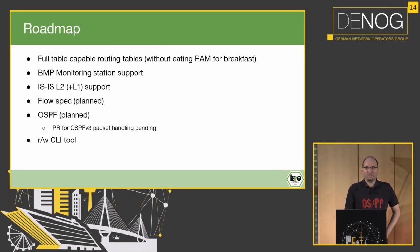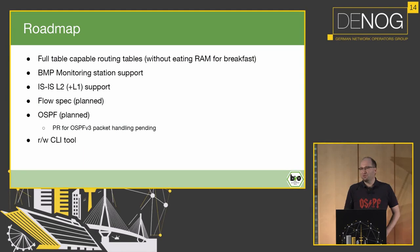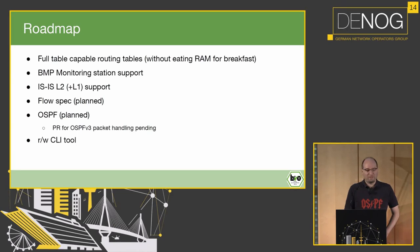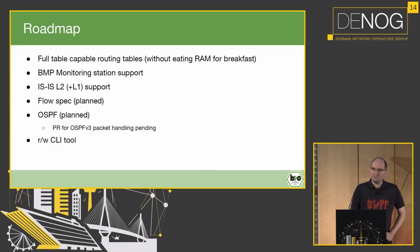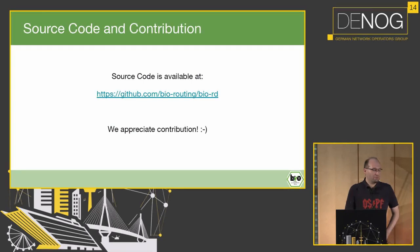Roadmap: we want it to be fast and scalable. The data structures are nice from a software engineering standpoint but not so much from a RAM/memory usage standpoint, so that's something we need to work on if we want to process full tables or multiples of that without eating memory for breakfast. BMP monitoring station support is coming. ISIS level 2 is looking good; level 1 might be added later. Flow spec would be nice, and for OSPF we have a PR open to look into — OSPF v3 — and obviously a read-write CLI tool like BIRDC would be nice. Source code is open source; we appreciate contributions and feedback.